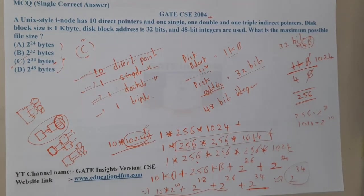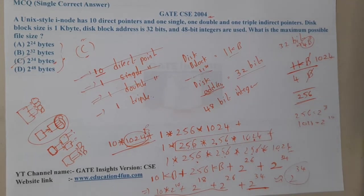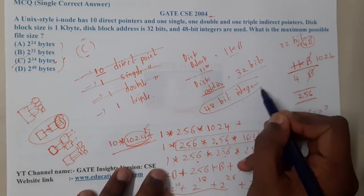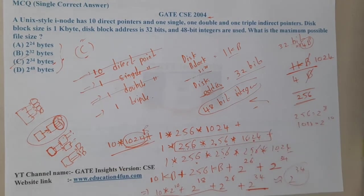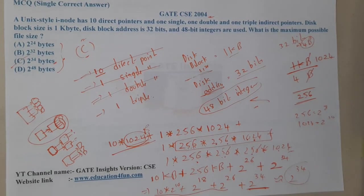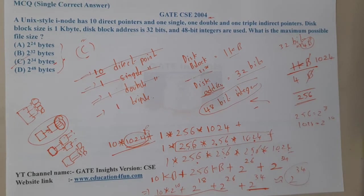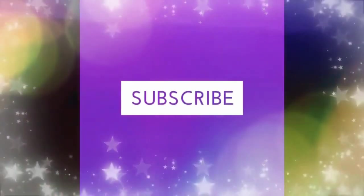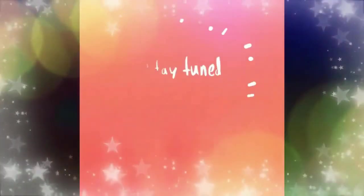There are around 4 to 5 questions in the previous year question papers with this pattern, so please practice them. Also, the 48-bit integer mentioned in the question was just there to confuse us — it has no relevance to the solution. Thanks for watching — like, share, and subscribe!